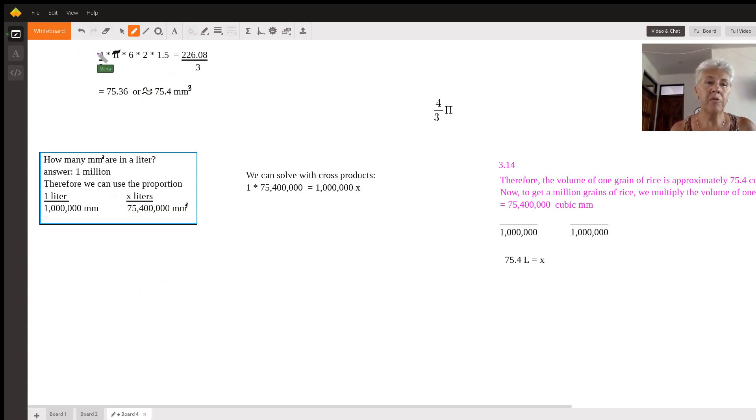Here we go four thirds times pi times six millimeters two millimeters 1.5 millimeters is going to give us a volume expressed in cubic millimeters for one grain of rice. When I multiply all the numerators here using 3.14 for a value of pi I get 226.08 dividing the numerator by the denominator by three I then get a total of approximately 75.4 cubic millimeters.